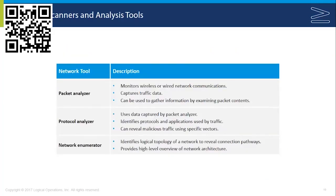Here's a table of scanning and analysis tools used within a network that function as security measures. A packet analyzer monitors wireless or wired network communications, captures traffic data, and can be used to gather information by examining packet contents — also known as a sniffer. A protocol analyzer uses data captured by a packet analyzer to identify protocols and applications used by traffic and can reveal malicious traffic using specific vectors. Most programs that do this function as both. A network enumerator, also known as a network mapper, is a device or program that identifies the logical topology of the network, showing the different connection paths and giving you an overview of the network architecture.